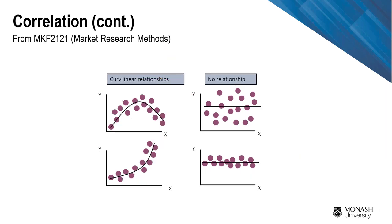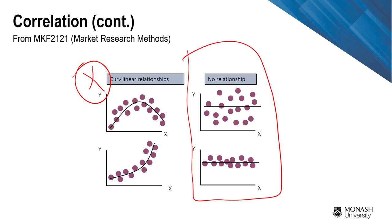In correlation, we are not measuring a curvy relationship, so please cross that out. And if you look at something where you really can't determine what the relationship is, then we can simply say there is no relationship. Your R, in this case, will be close to zero. We are not really measuring that, so don't bother about it.